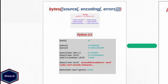Now let's move to the next function: bytes, which is only available in Python 3. The bytes function converts the object passed as an argument to a bytes object. A bytes object in Python 3 is actually equivalent to a string object from Python 2, consisting of a sequence of immutable bytes. Let's see some examples.